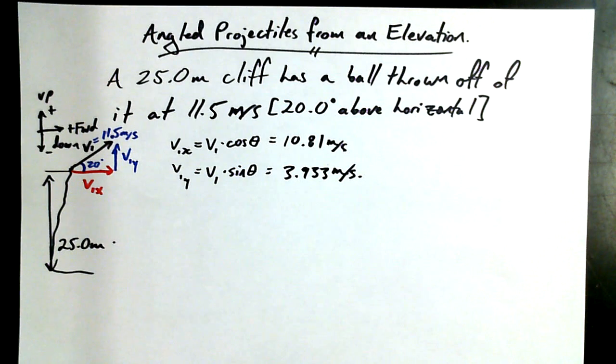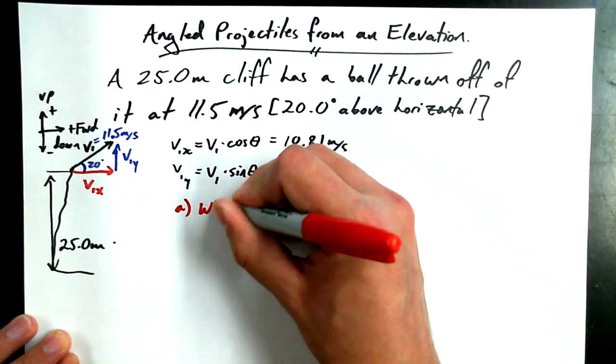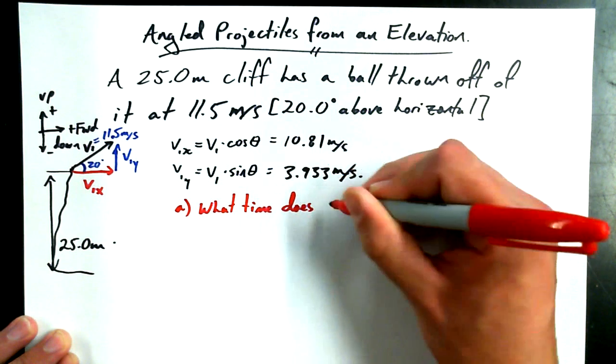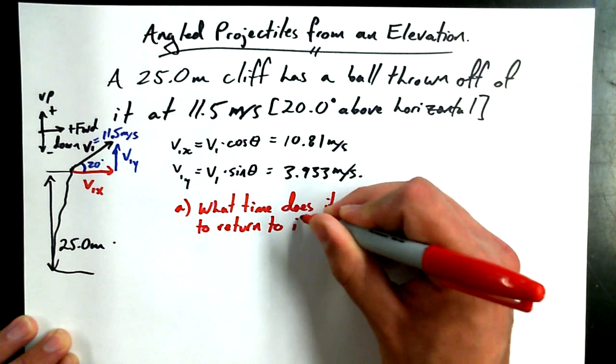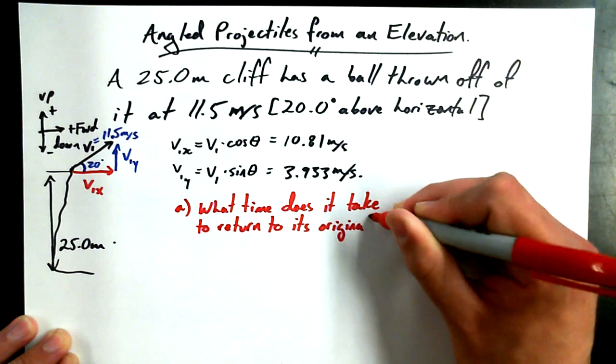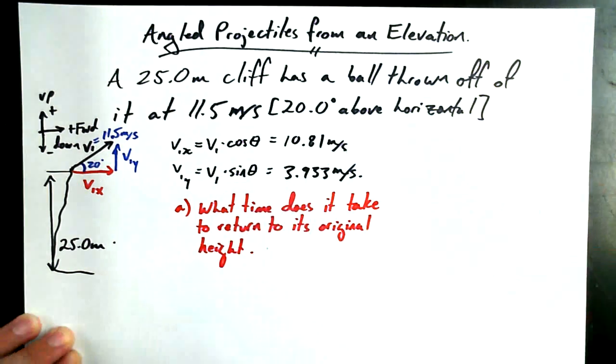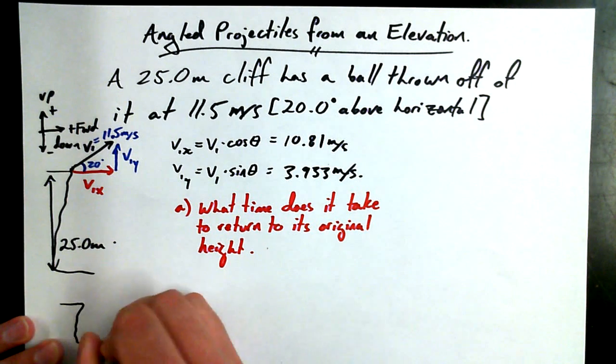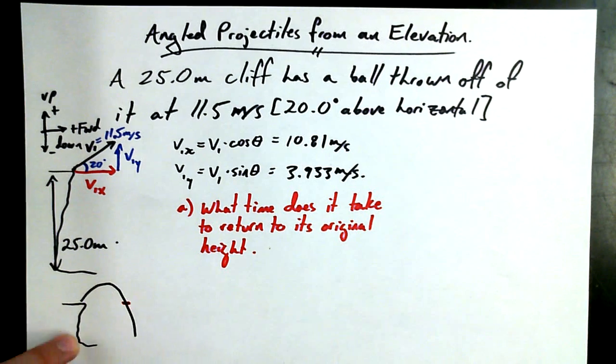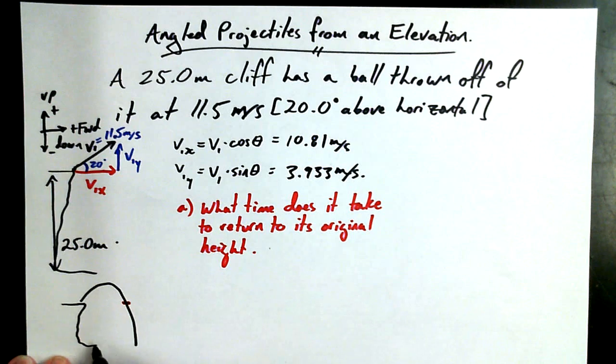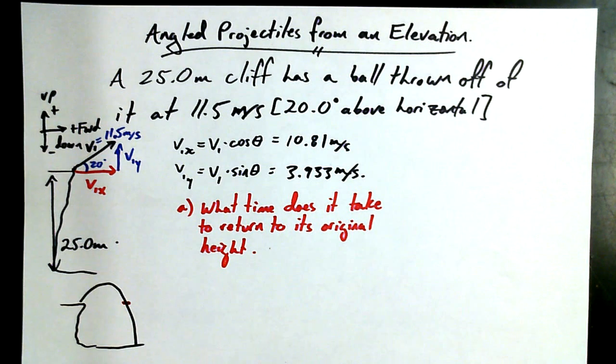All right, so we haven't even stated a question yet. And we already know, just working on autopilot, that we're going to find V1x and V1y. Here's the first question. What's the time that it takes to return to its original height? What time does it take to come back to its original height?